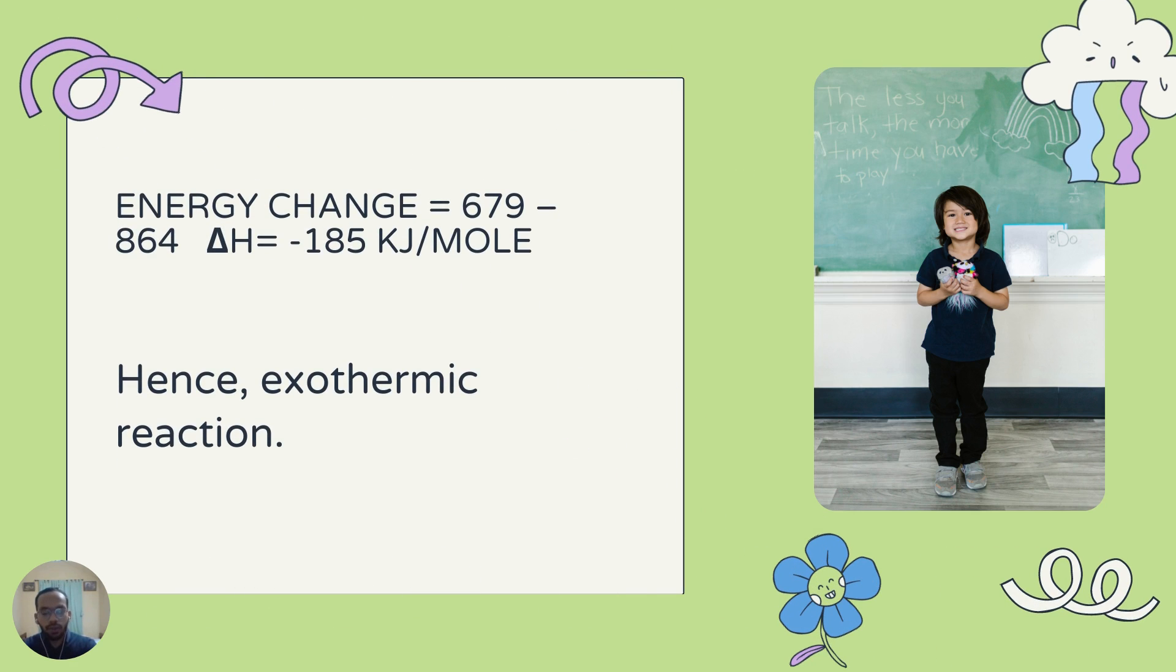Finally, if we want to calculate the total enthalpy change, we just simply subtract energy in from energy out. So, the energy change is 679 minus 864, that is basically minus 185 kJ per mole. The energy change here shows a negative sign, that means the energy is released to the surrounding, so it is an exothermic reaction.